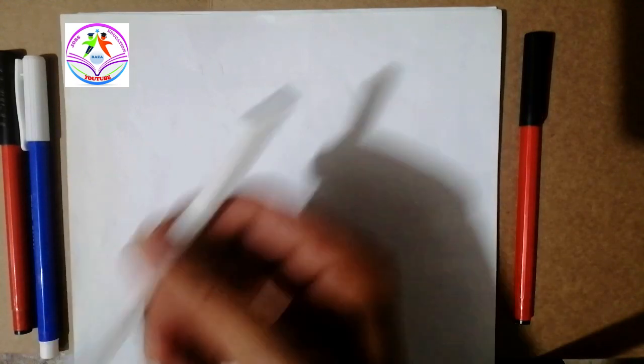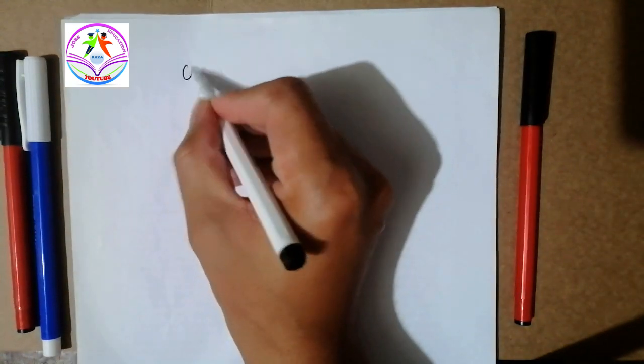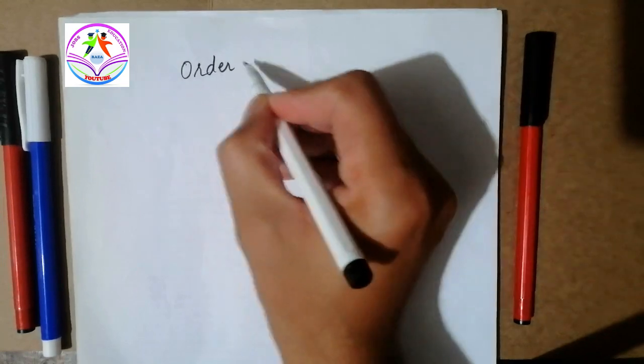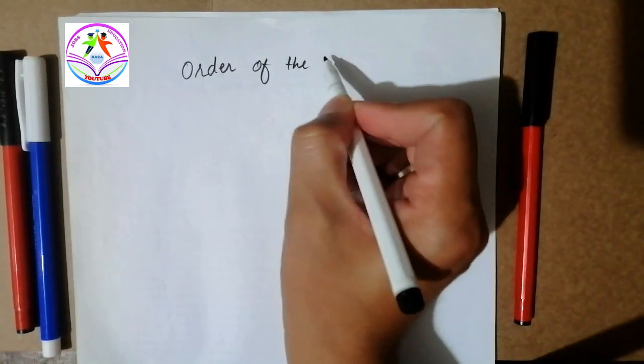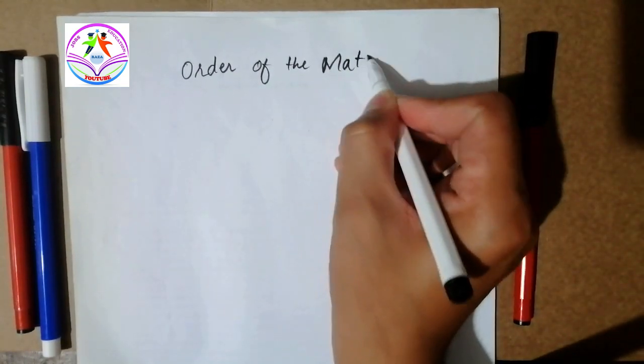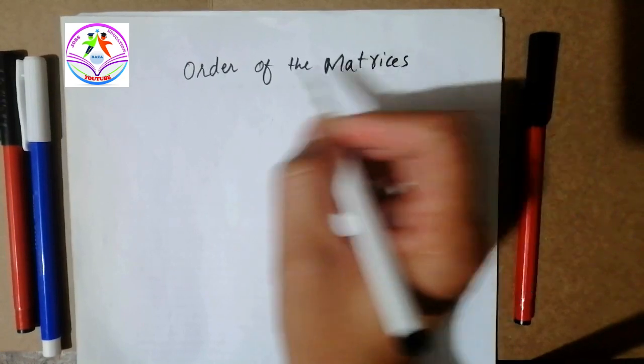Firstly I will elaborate what is order of the matrices. So our topic is order of the matrices. Order of the matrices is basically, firstly I will elaborate with an example.